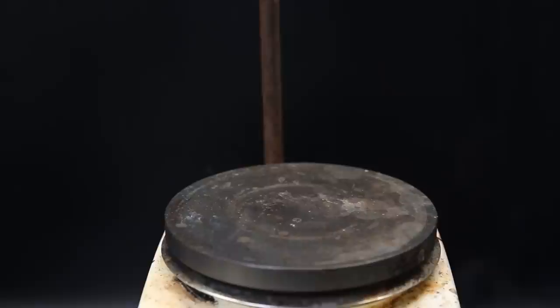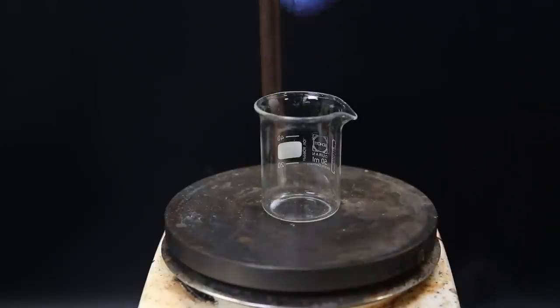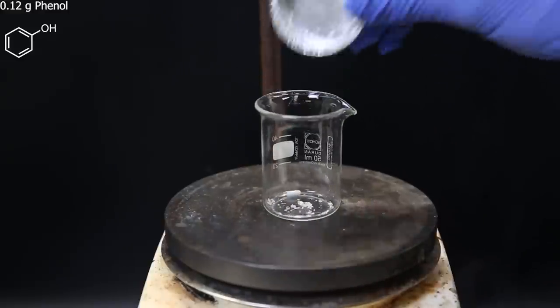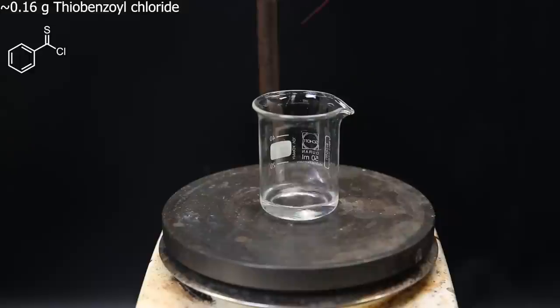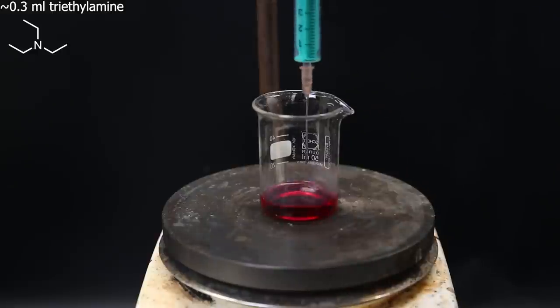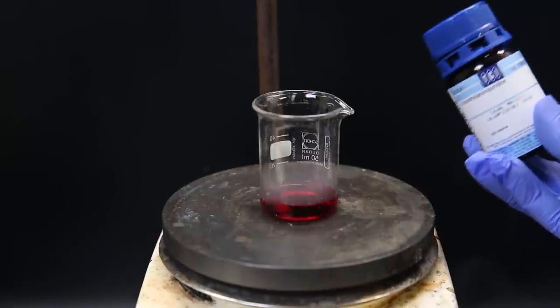So let's try it out. So I set up a small beaker, and add in a tiny stir bar. I then add 0.12g of phenol, 5ml of DCM, about 0.16g of thiobenzoyl chloride, and about 0.3ml of triethylamine.